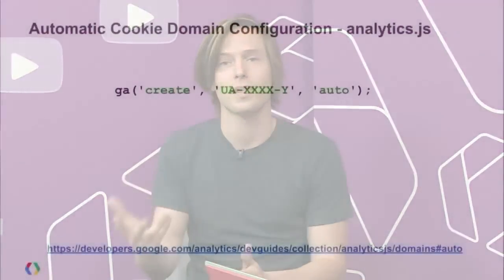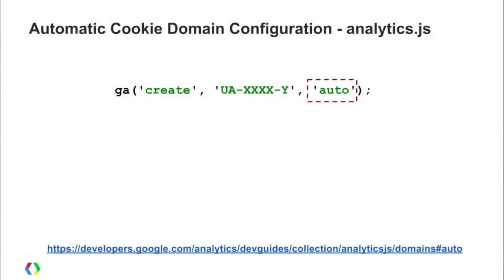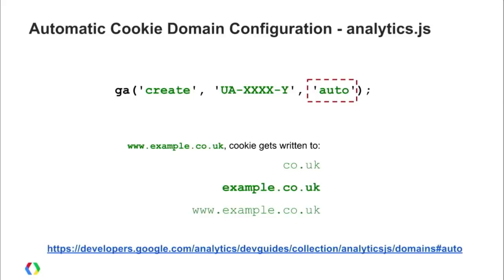The first thing I wanted to highlight is automatic cookie domain configuration. Before, with Analytics.js or even GA.js, you had to specify what domain you wanted the cookie written on. Now you can supply an 'auto' argument for Analytics.js, and it will write the cookie at the highest level domain possible. For example, if your site was example.code.uk, Analytics.js would try to write to code.uk — that would fail — then try example.code.uk, which would succeed. So that's where the cookie gets written.